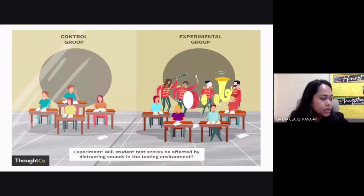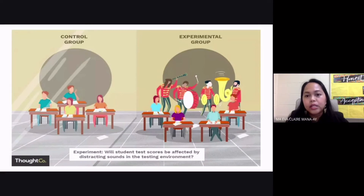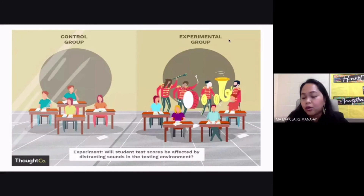So the distracting sounds are going to be your independent variable, and the results of that — your student test scores — that is going to be your dependent variable. As you can see here, your experimental group has your independent variable, so it has all the distracting sounds that your students can hear. Your experimental group is the group that you use to really measure the effect of your independent variable and how it affects your dependent variable.